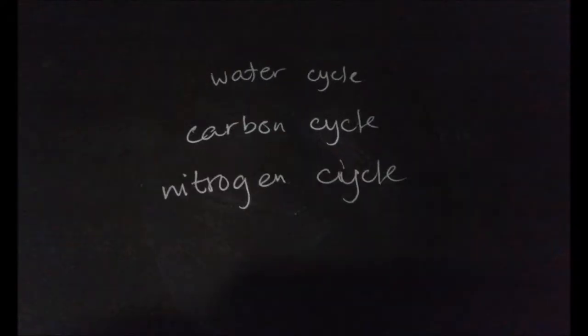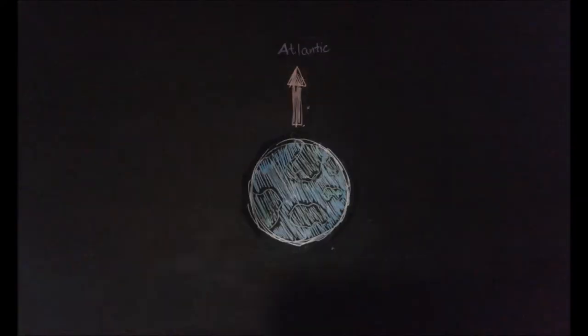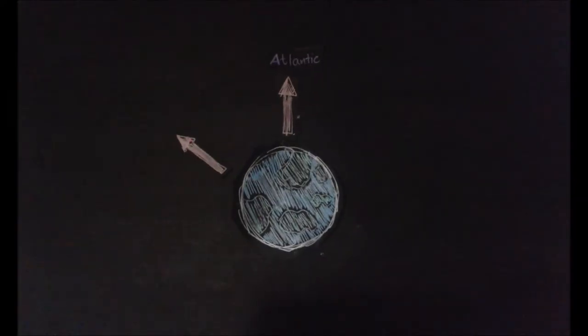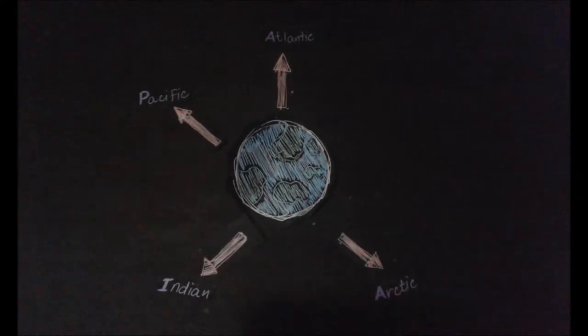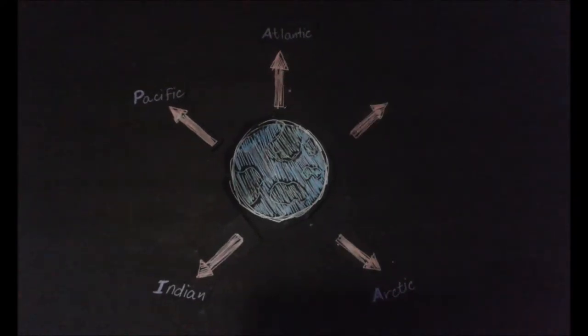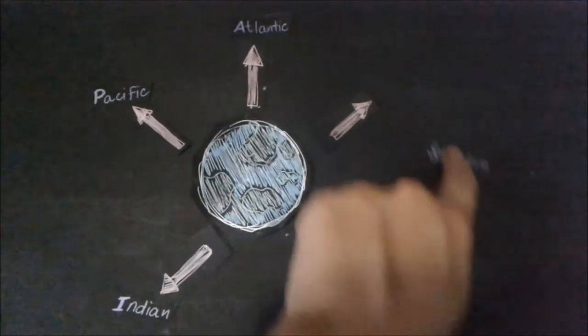The sea is conventionally divided into five large oceanic sections, namely Atlantic, Pacific, Indian, Arctic, and Southern Ocean.